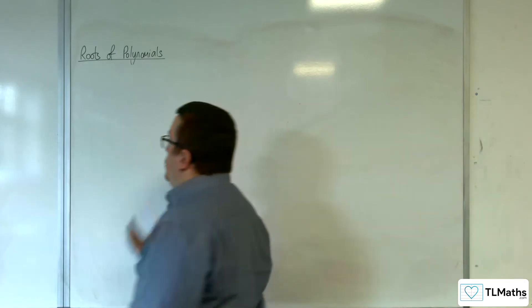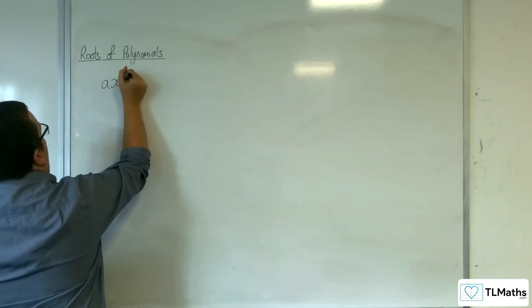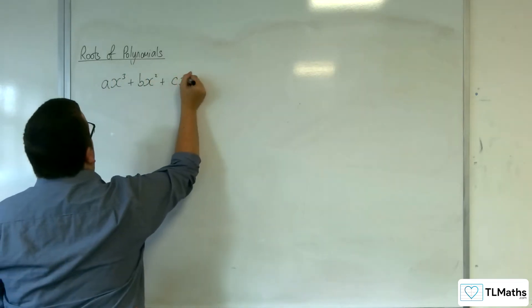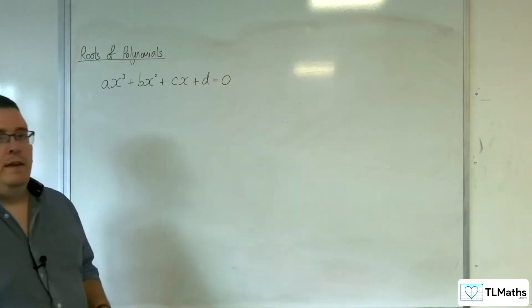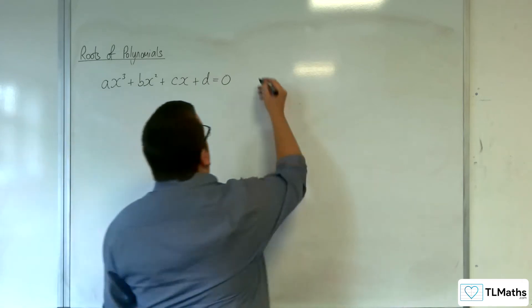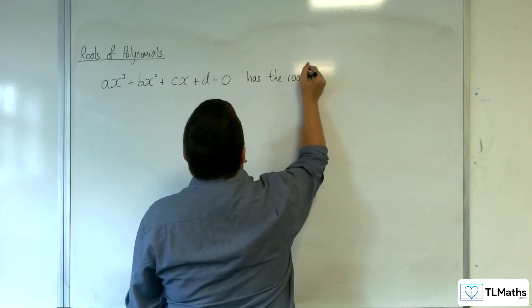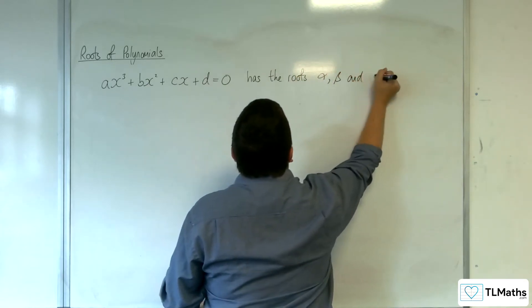We're going to start off with a general cubic equation: ax³ + bx² + cx + d = 0. Now, that's going to have up to three roots, and we can say has the roots α, β, and γ.